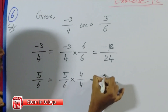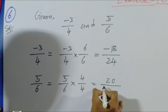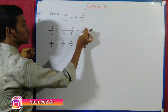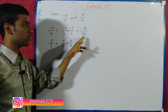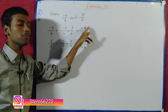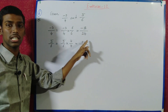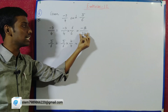So minus 3 by 4 is equal to minus 18 by 24, and 5 by 6 is equal to 20 by 24. Now the denominator is equal.